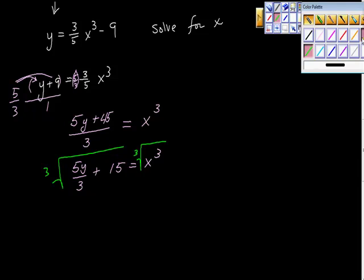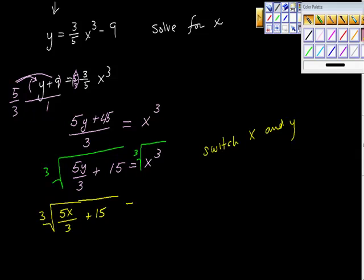Now what? Exactly, switch x and y. So we're going to get the cube root of 5x over 3 plus 15. This is all going to be under that radical right there, is equal to y. And there's our answer.